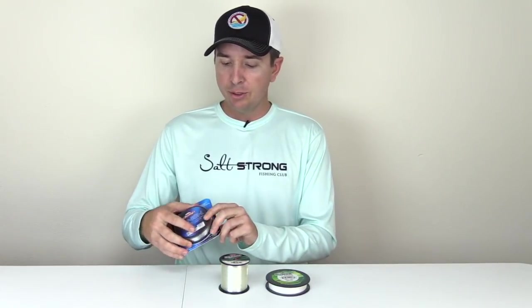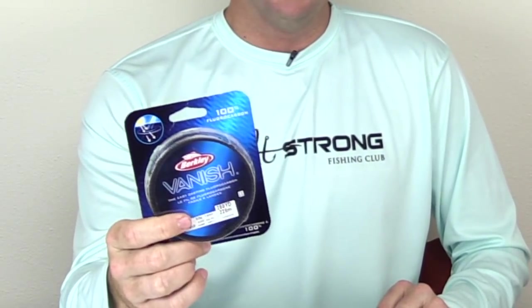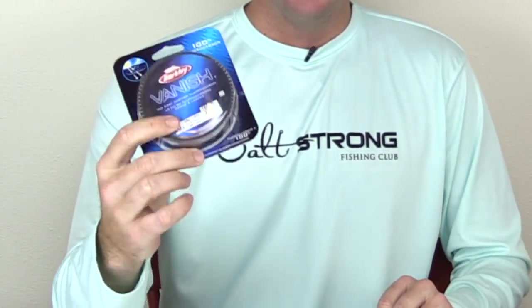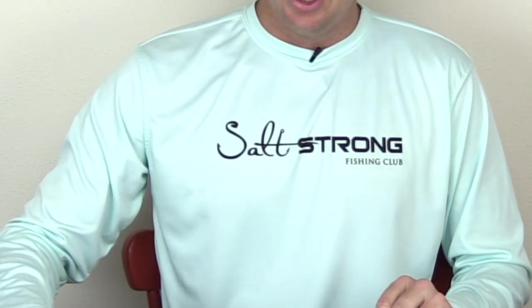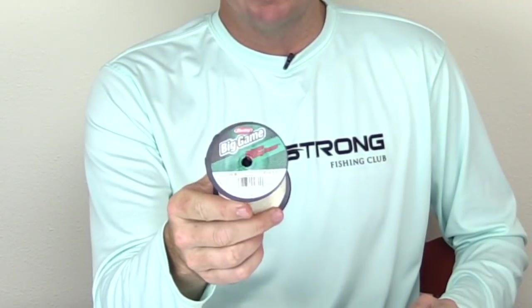The lines that we used - for fluoro was this Vanish line, a pretty popular line, and in this case the clinch knot proved to be the winner. Then we have Berkeley Big Game, that was the traditional mono - clinch knot won as well.